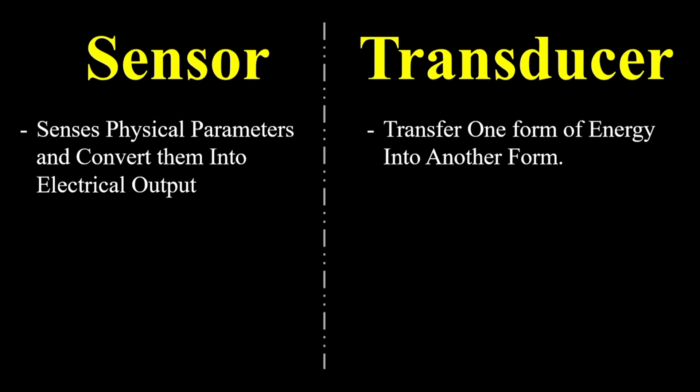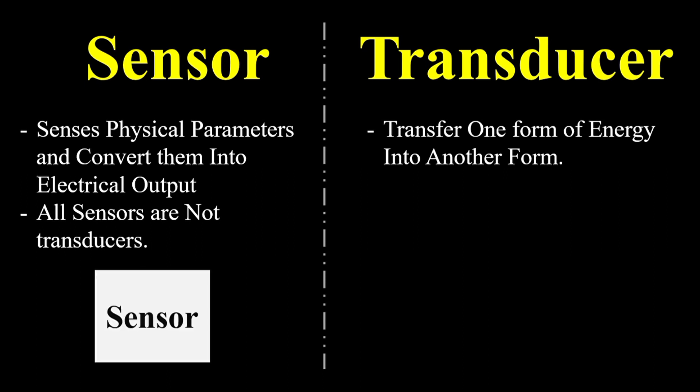Next is that all sensors are not transducers. As we know, the sensor is an independent device — it is used to sense some physical parameter and, irrespective of that, give some indication or some value. It does not convert one form of energy into another form. It simply senses and gives us the output.